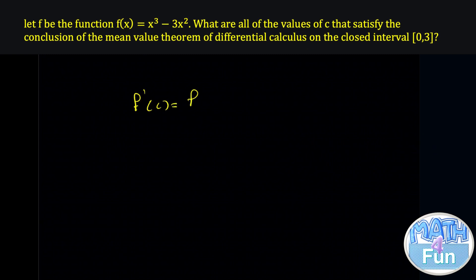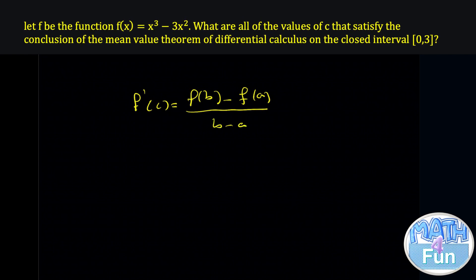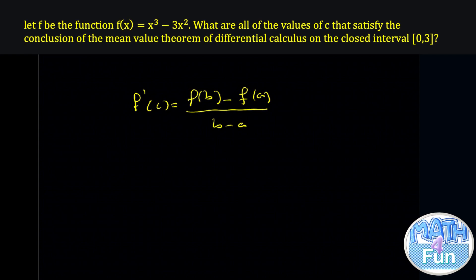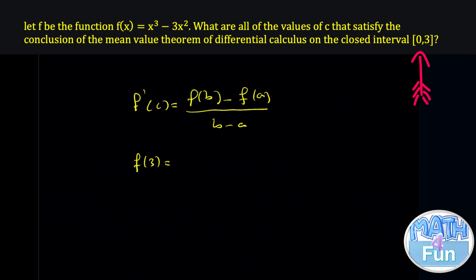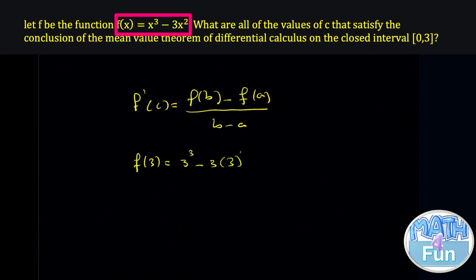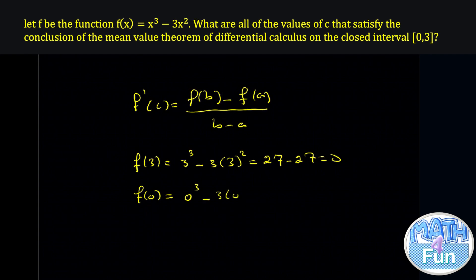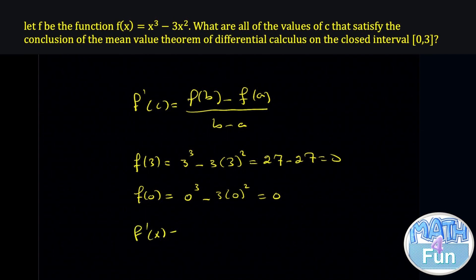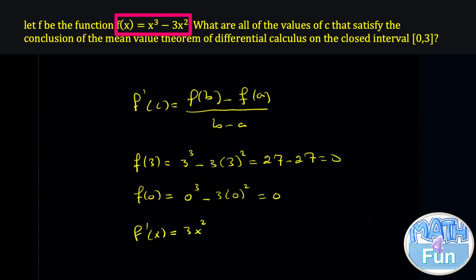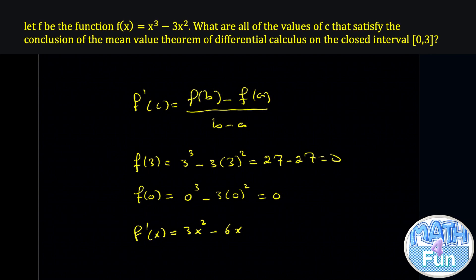We need to find f of b and f of a and replace them in the equation. f of b is f of 3, and f of a is f of 0. f of 3 equals 3 cubed minus 3 times 3 squared, which equals 27 minus 27, which equals 0. f of 0 equals 0 cubed minus 3 times 0 squared, which equals 0. Also, f prime of x equals 3x squared minus 6x.